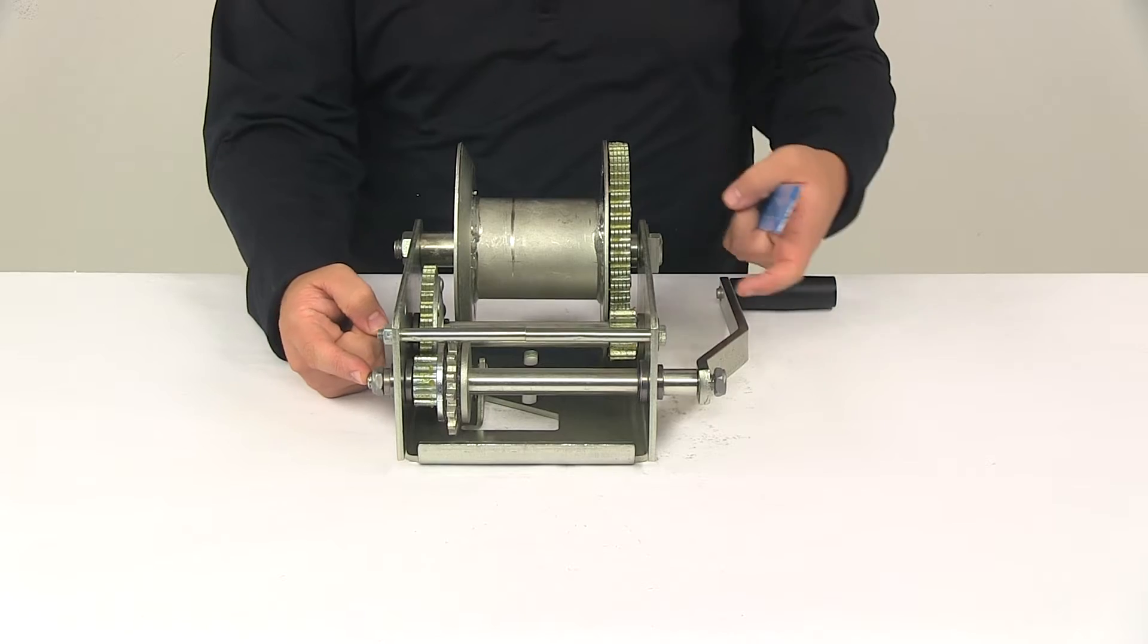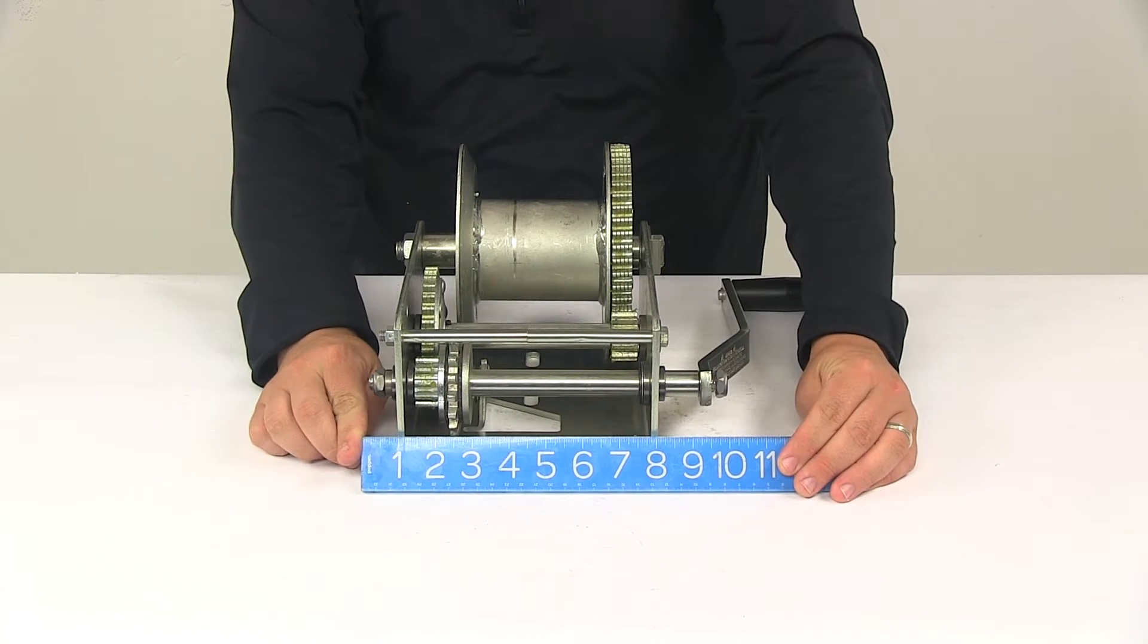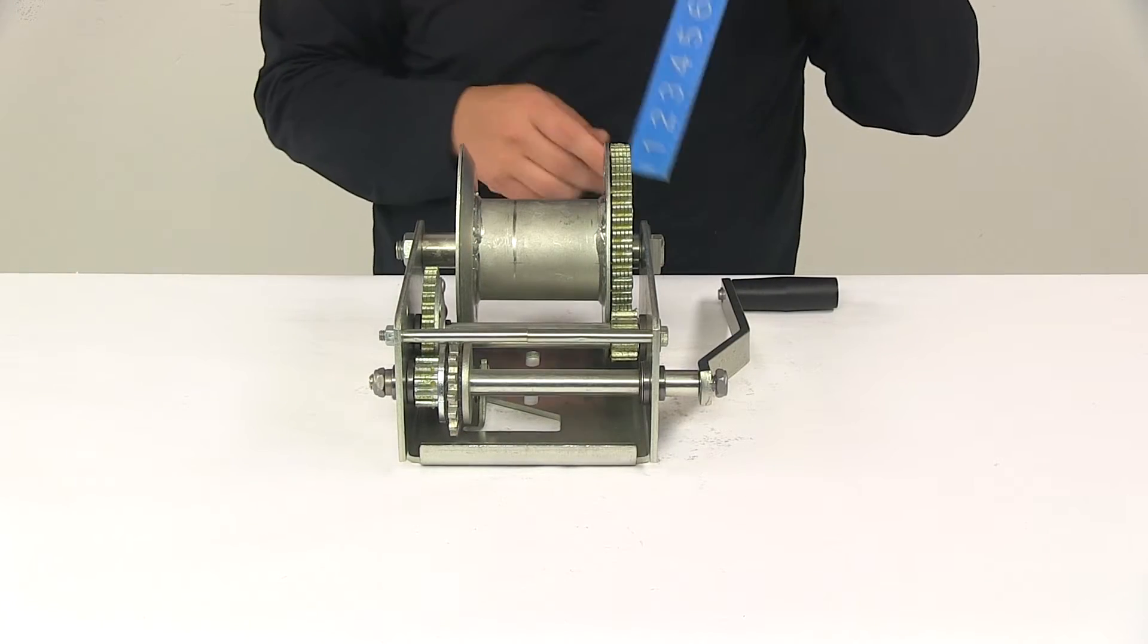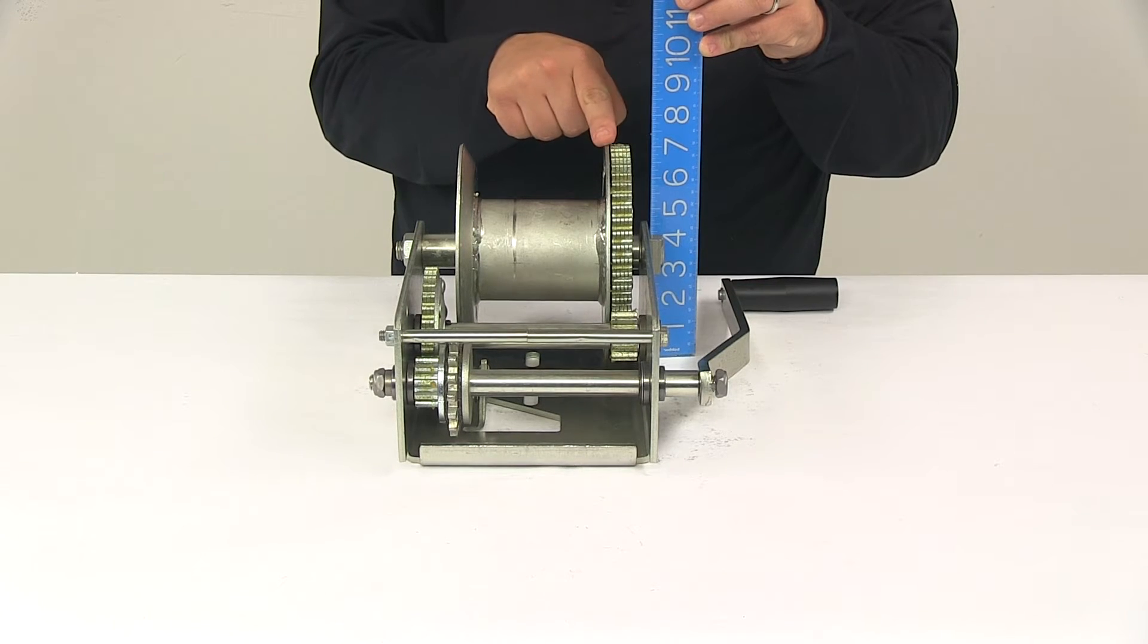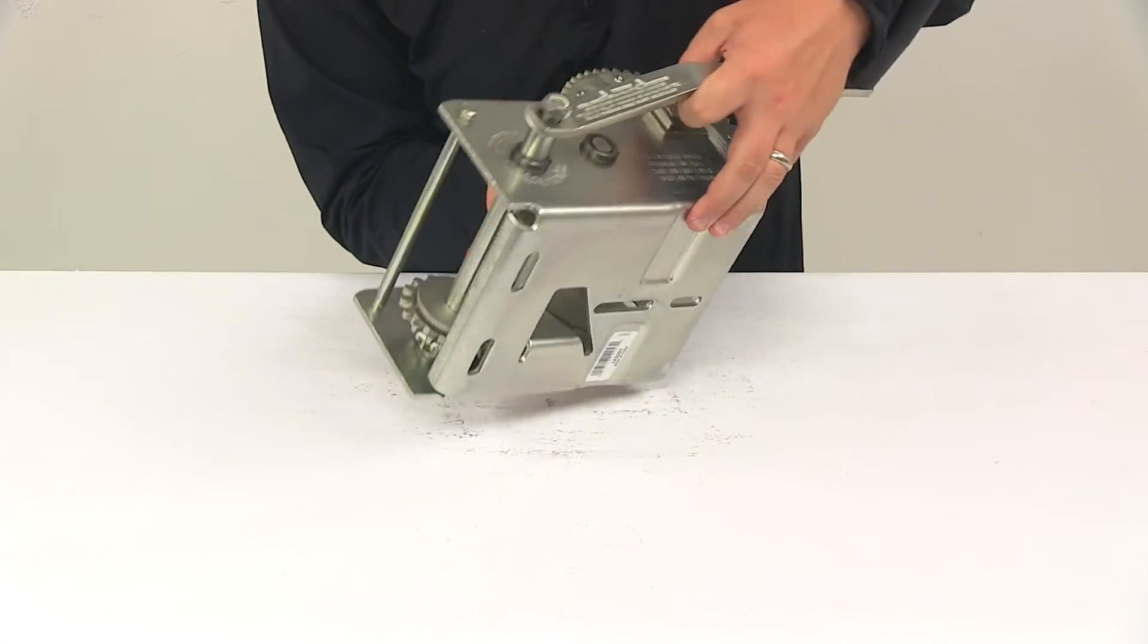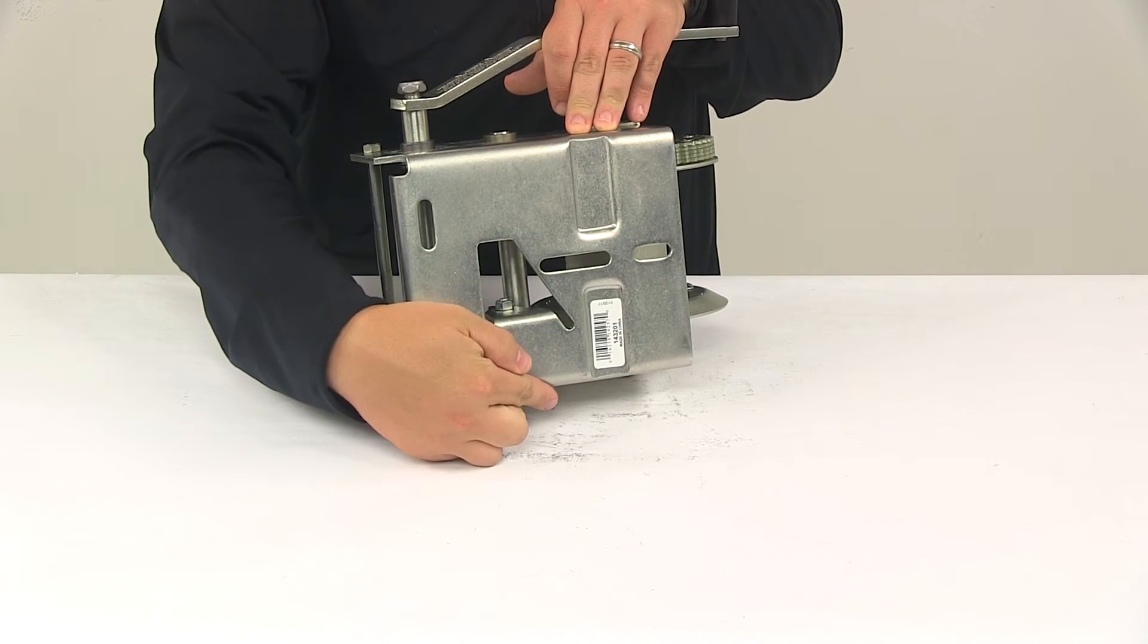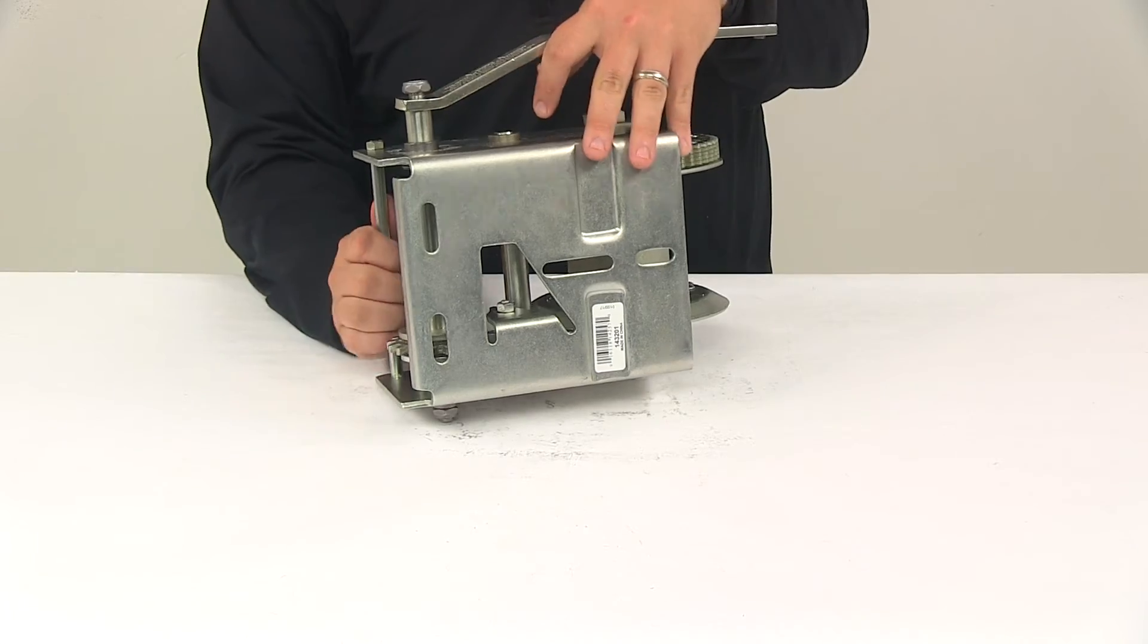That measurement is around nine and three quarter inches long. The overall height measurement to the top of this point is around seven and one quarter inches tall. When it comes to the base, the area that makes contact with your mounting surface, side to side is about seven inches wide. Front to back is about eight and one quarter inches long.